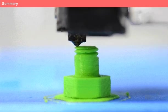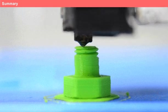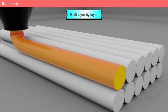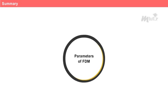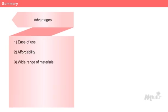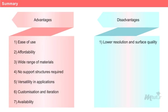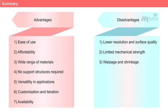Summary: Fused deposition modeling is an extrusion-based rapid prototyping process. FDM works on the principle of heating the material, which is generally in the form of a thermoplastic filament, and the model is built layer by layer like other RP systems. FDM is influenced by machine and material parameters. The advantages include ease of use, affordability, wide range of materials, no support structures required, versatility in applications, customization and iteration, and availability. The disadvantages include lower resolution and surface quality, limited mechanical strength, warpage and shrinkage, print speed, post-processing may be required, and material considerations.